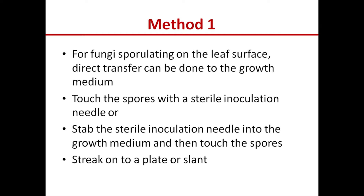To perform direct transfer, touch the spores on the leaf surface with a sterile inoculation needle and inoculate the medium in the lab. Alternatively, stab the sterile inoculation needle into the growth medium so that some medium gets attached to the needle and it becomes wet. When the wet needle is touched to the spores, the spores come easily onto the inoculation needle. After touching the spores, streak the inoculation needle onto a plate or slant to transfer the spores directly to the medium.